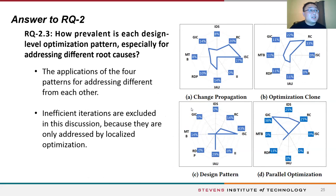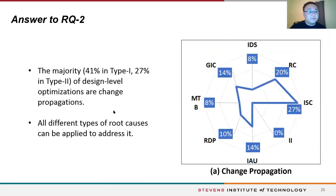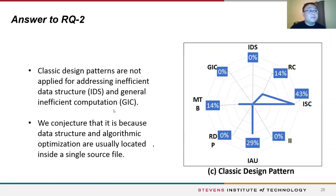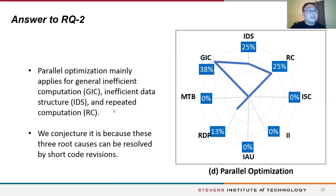We investigated the prevalence of each design-level optimization pattern for addressing different root causes. The applications of the four patterns differ quite widely across root causes. The majority of design-level optimizations are change propagation. Optimization clone is not applied for addressing inefficiency under special cases, likely because special cases are treated specifically and optimizations would not be cloned. Classic design pattern does not apply for inefficient data structure or general inefficient computation, since those optimizations locate inside a single source file. Parallel optimization mainly applies for general inefficient computation, inefficient data structure, and repeated computation, as these root causes can be resolved by short code revisions.